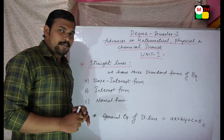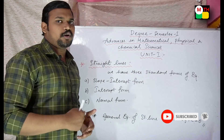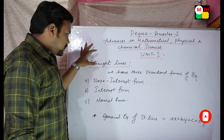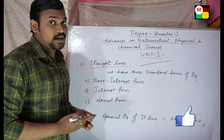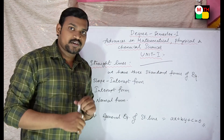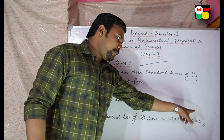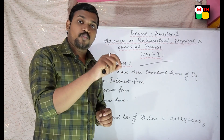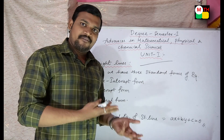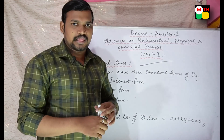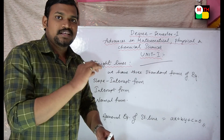So the topic is straight lines. The general equation of a straight line — what is this? It is Ax plus By plus C equal to 0. That is the general form.